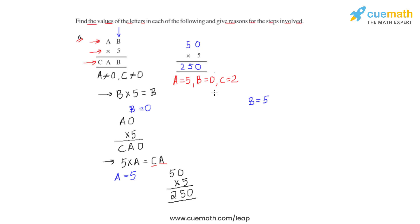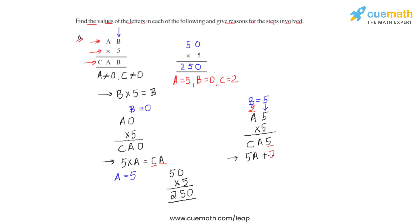Now let us see the different set of values when b equals five. Inserting this value into the multiplication product gives us a5 times five, with a result of ca5. Studying the ones place: five times five equals 25, where five is at the ones place and two is the carry. This results in the equation: five times a plus the carry two, giving a two-digit number where the units digit is a and the tens digit is c.